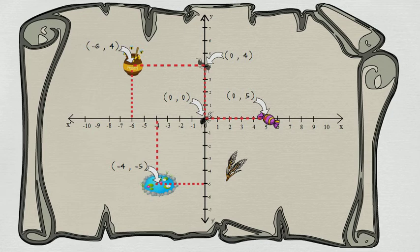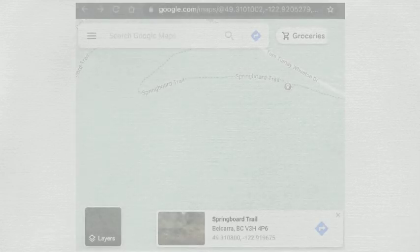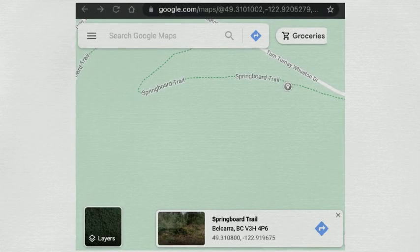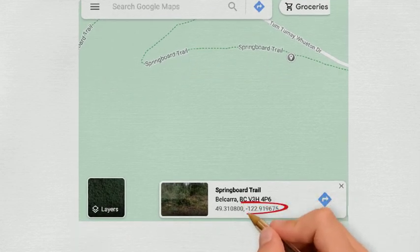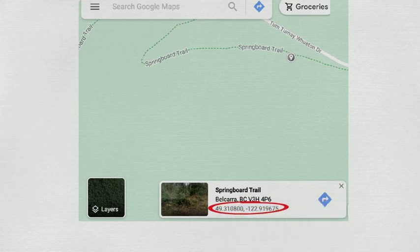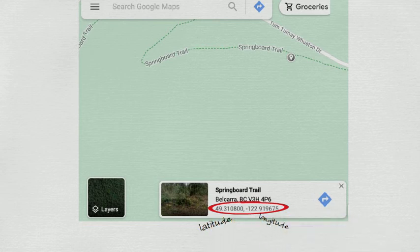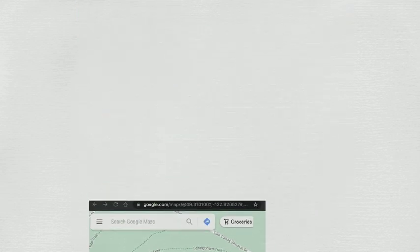Coordinate plane can be used in many different scenarios. Have you ever seen this number pair on Google Maps and wonder what they are? Now you know it's a coordinate. These numbers are called latitude and longitude. We can locate anything on Earth by these numbers.